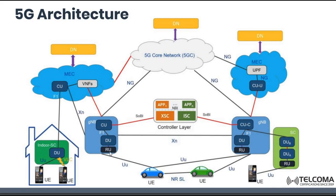The Distributed Unit is connected to a Radio Unit, which works as a normal Remote Radio Unit or Remote Radio Head. That gNodeB is connected to the UE through the UU interface.